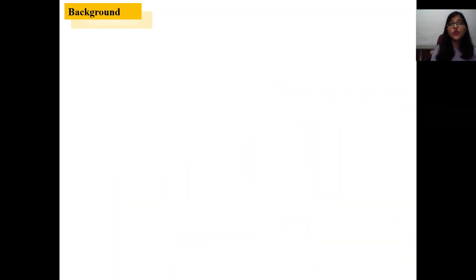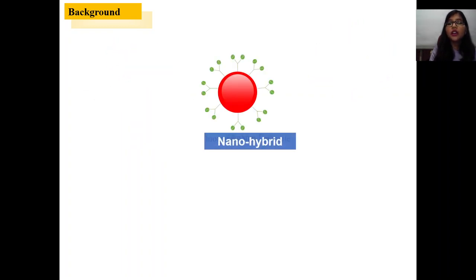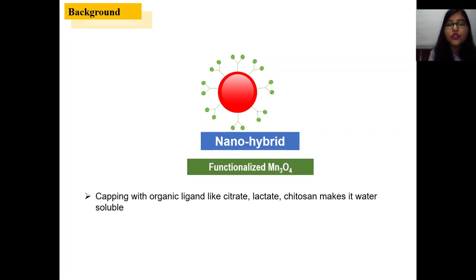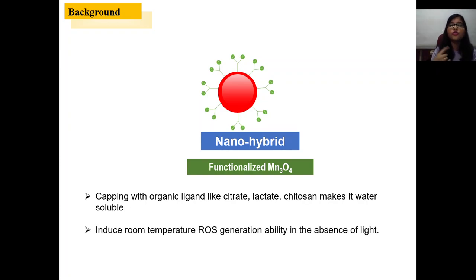So what are we doing in our lab? We are taking an inorganic nanoparticle, tagging it with organic ligands, giving rise to a construct known as nanohybrid such as functionalized Mn3O4. We capped Mn3O4 with organic ligands like citrate, lactate, chitosan and make it water soluble because to be a good drug it must be water soluble. The capping also induces ROS generation ability at room temperature and in the absence of light.